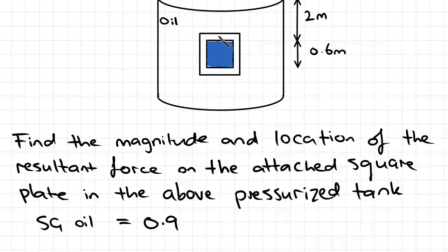Because it's a vertical submerged surface, we can use the pressure prism method. It's only because it's rectangular. If it wasn't rectangular, it's best not to use the pressure prism method. We've been given the specific gravity of oil which is equal to 0.9.